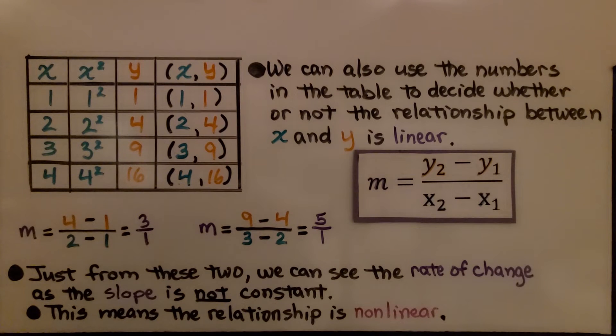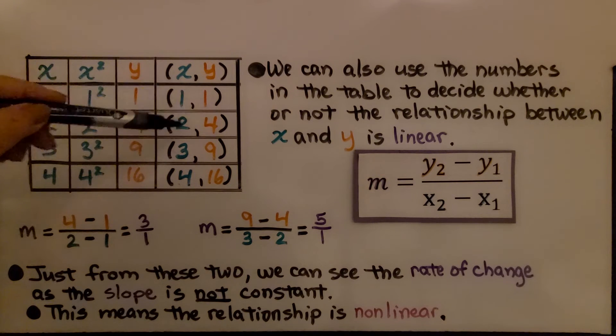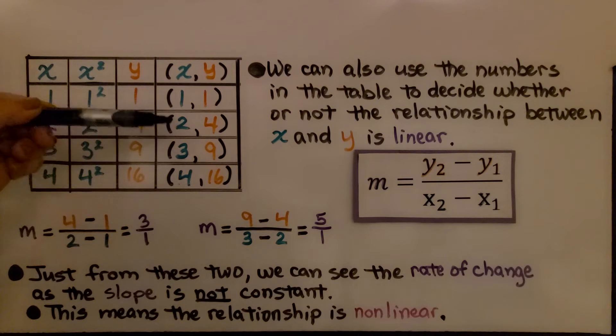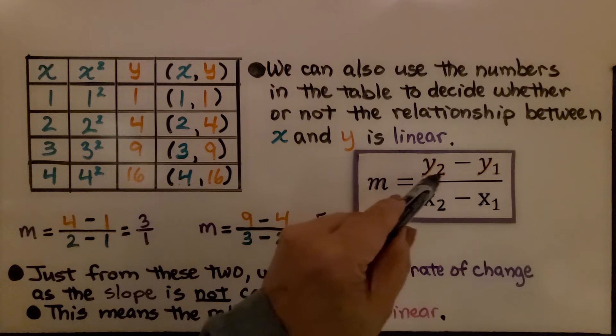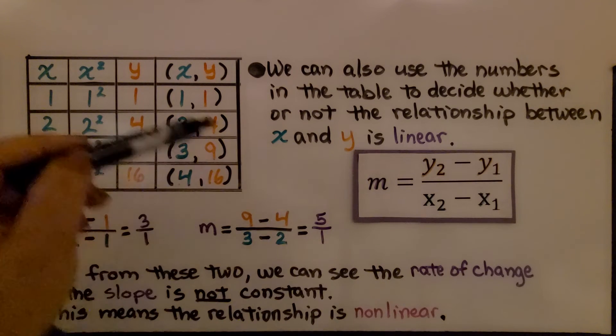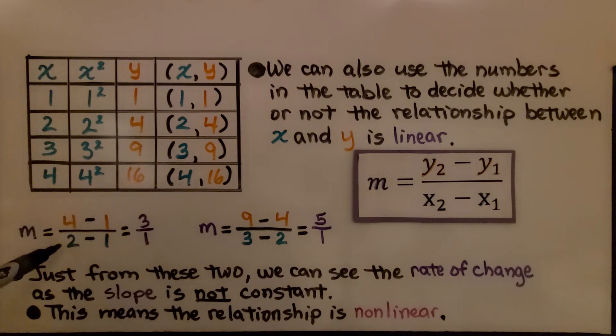We can also use the numbers in the table to decide whether or not the relationship between x and y is linear. We just use the slope formula. We take two ordered pairs, and this will be our second, this will be our first, and we do the slope formula. We do the second y minus the first y, so we have 4 minus 1. Then we do the second x minus the first x, so we have 1. That gives us a slope of 3 over 1 or 3.